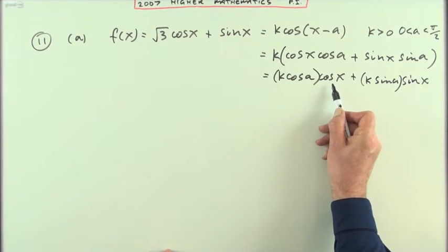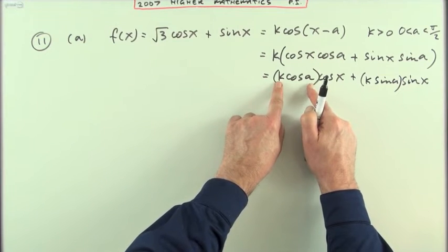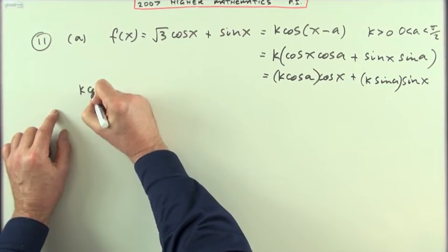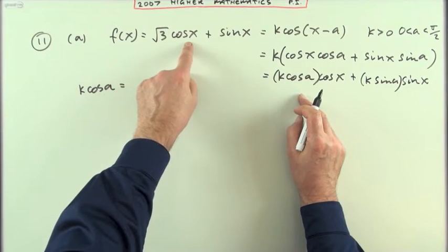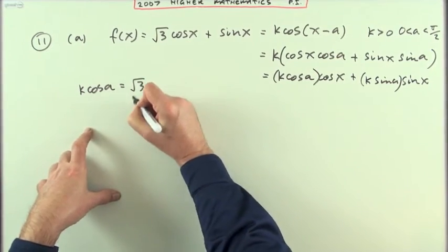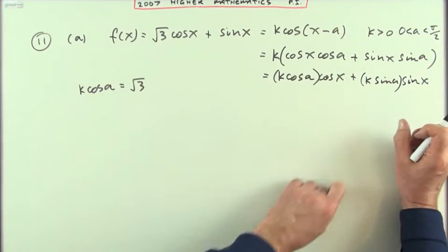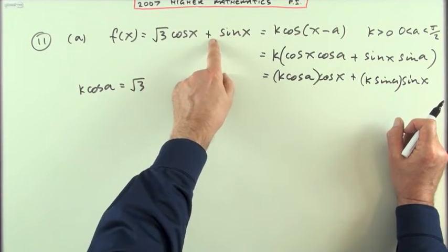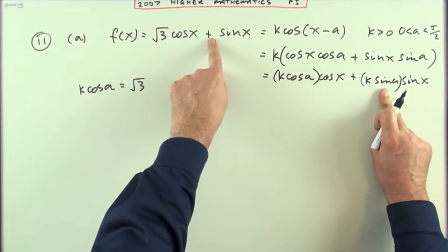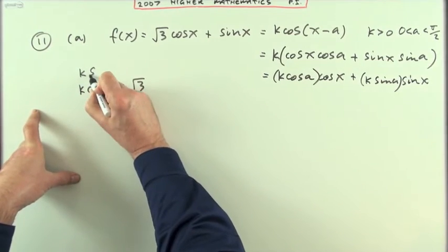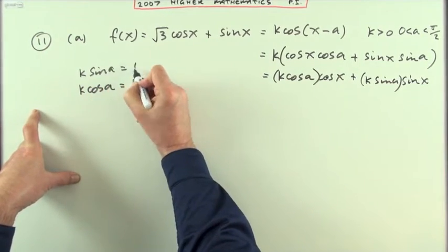How many cos x here? k cos A equals root 3. Sine x's, k sin A equals how many sine x here, I've got one. So k sin A equals one, I'm going to put that on top.